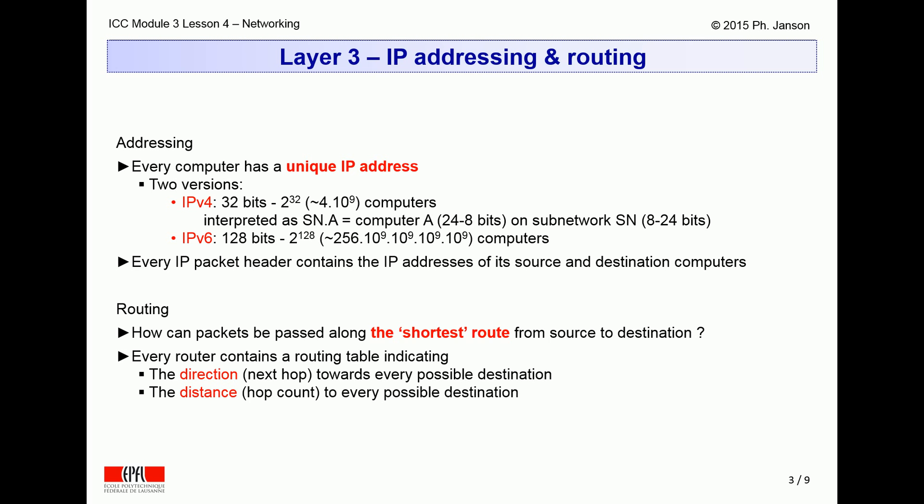The IP header always carries the addresses of both the sending and receiving computers. Every Internet router always maintains an internal routing table, which always indicates the shortest path or shortest route to any IP address or group of IP addresses in the Internet. This table contains two pieces of information for each target address: first, the direction to be taken on the next hop towards the intended destination address, and secondly, the distance in terms of the number of hops to that possible target destination address.